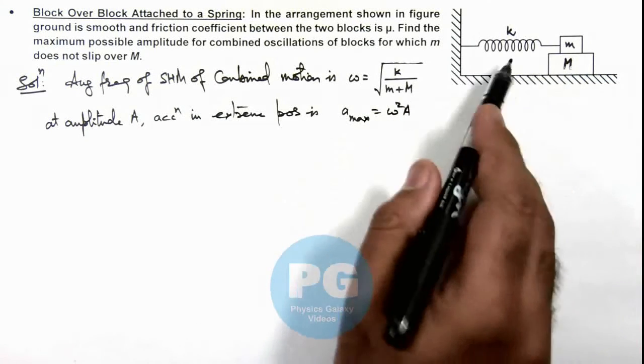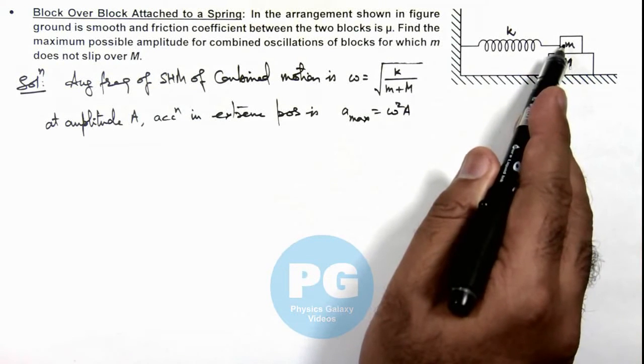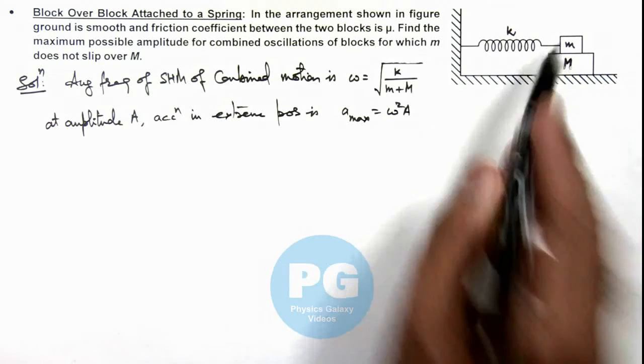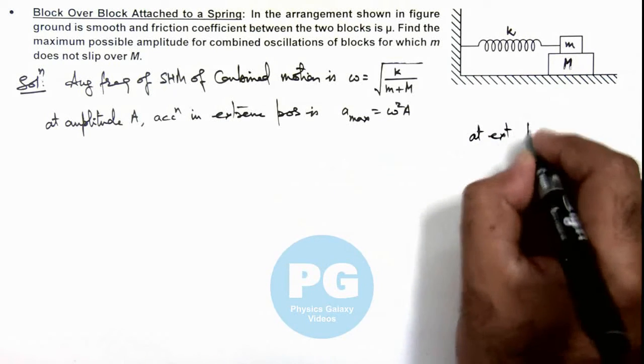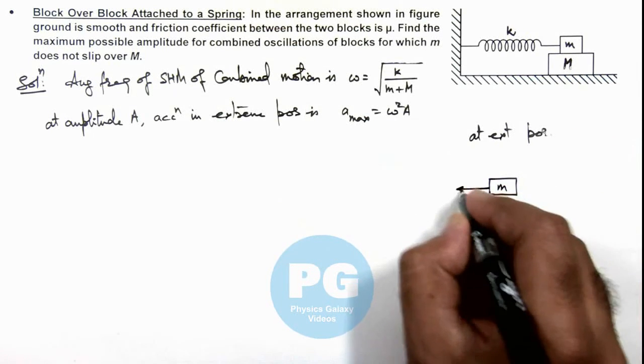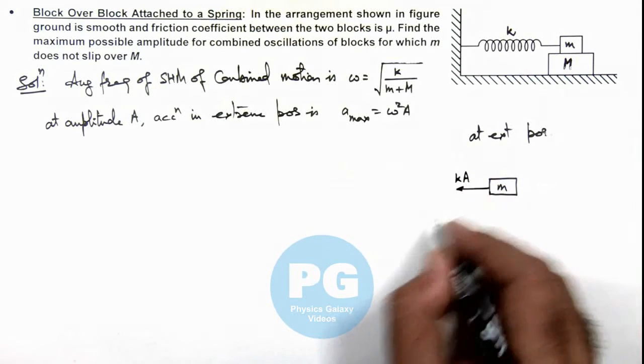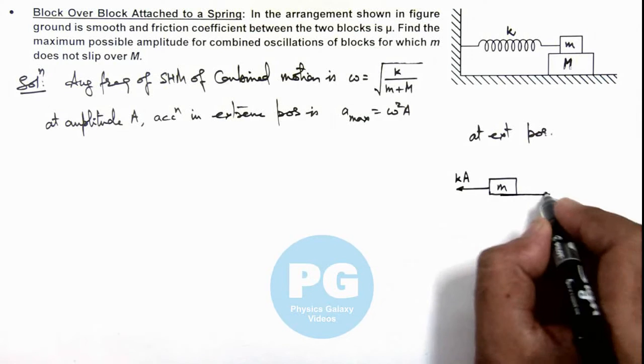When the block is at its extreme position, the force acting on the upper block would be maximum, that is k times A. At extreme position, the spring exerts force k times A, and toward right it will be experiencing the friction.